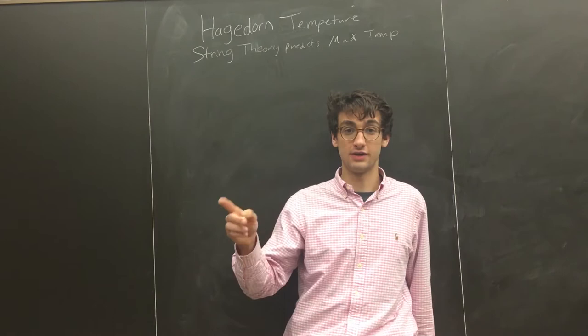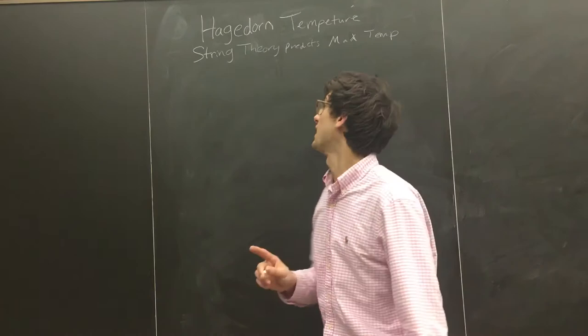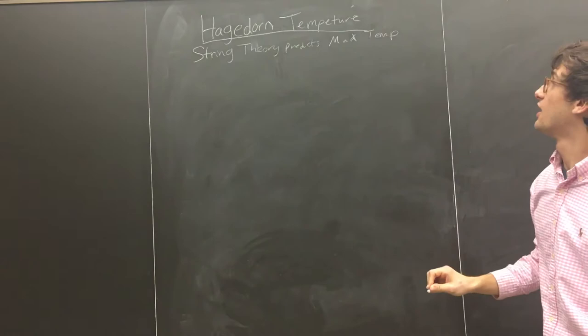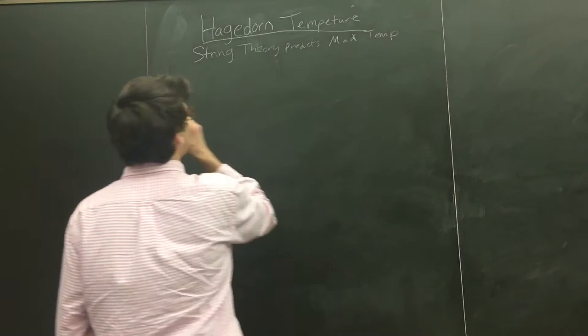And a surprising property, one of the surprising properties, is that it predicts a maximum temperature that the universe could have. And that is actually really interesting. It's called the Hagedorn Temperature, I think.